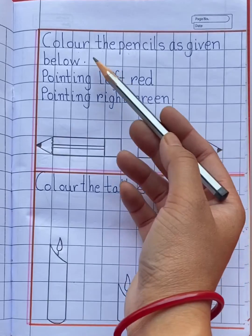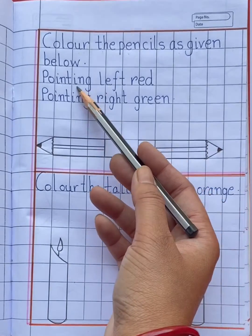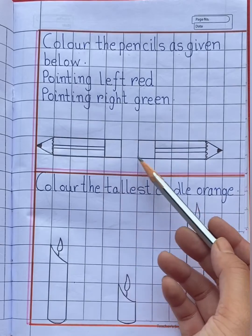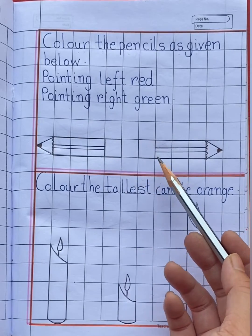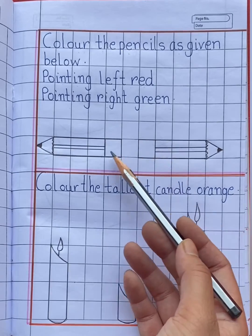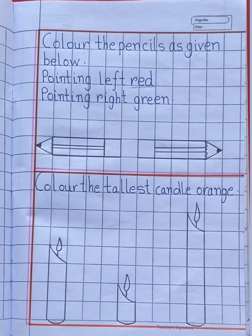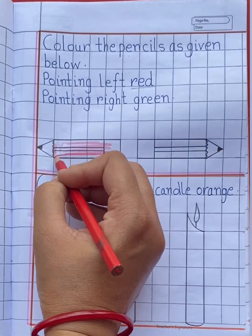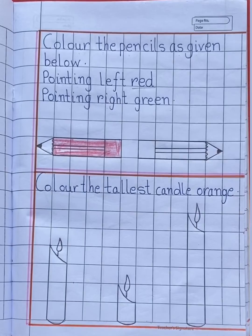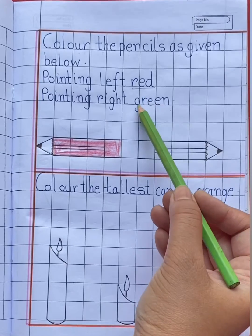The next question is: color the pencils as given below. Can you see the pencils, children? Pointing left — red color. Pointing right — green color. Now, look here. Here you can see two pencils. Which pencil is pointing left — first or second? Yes, the first pencil is pointing left. So, color the first pencil with red color. And the second pencil is pointing right. So, color the second pencil with green color.